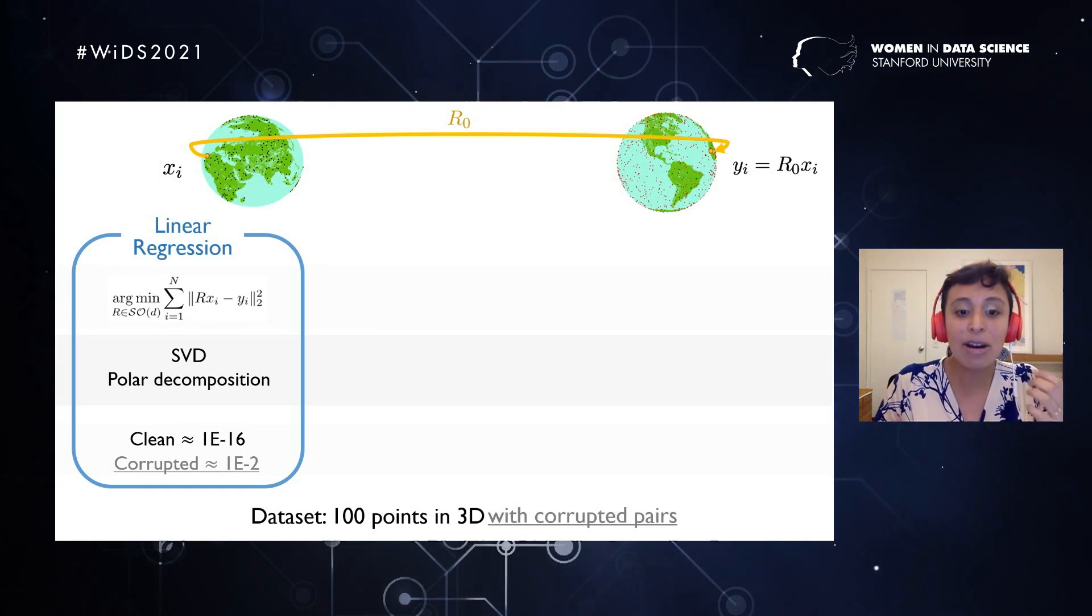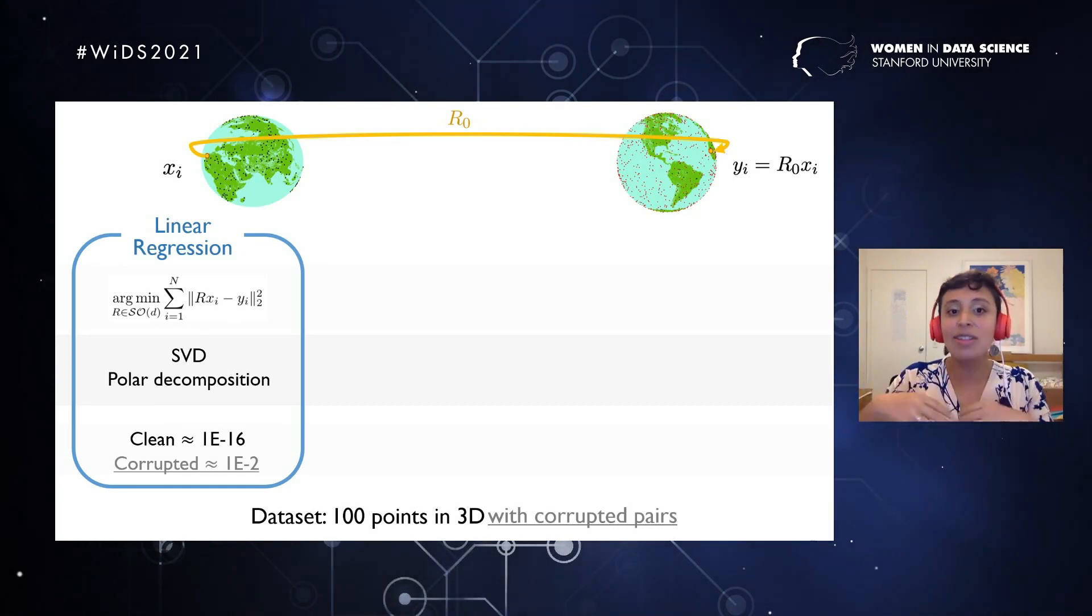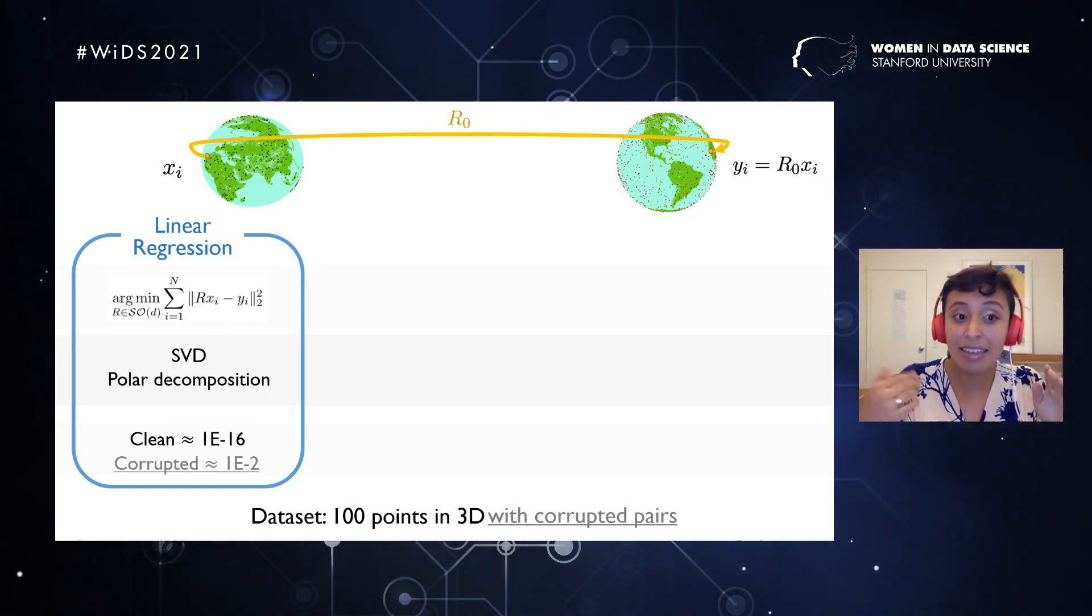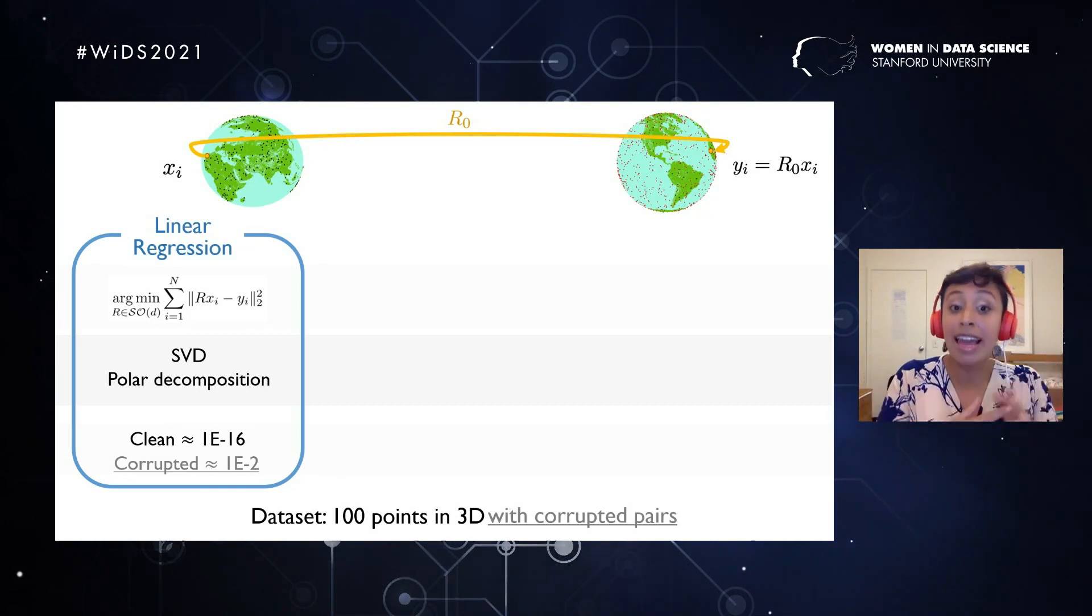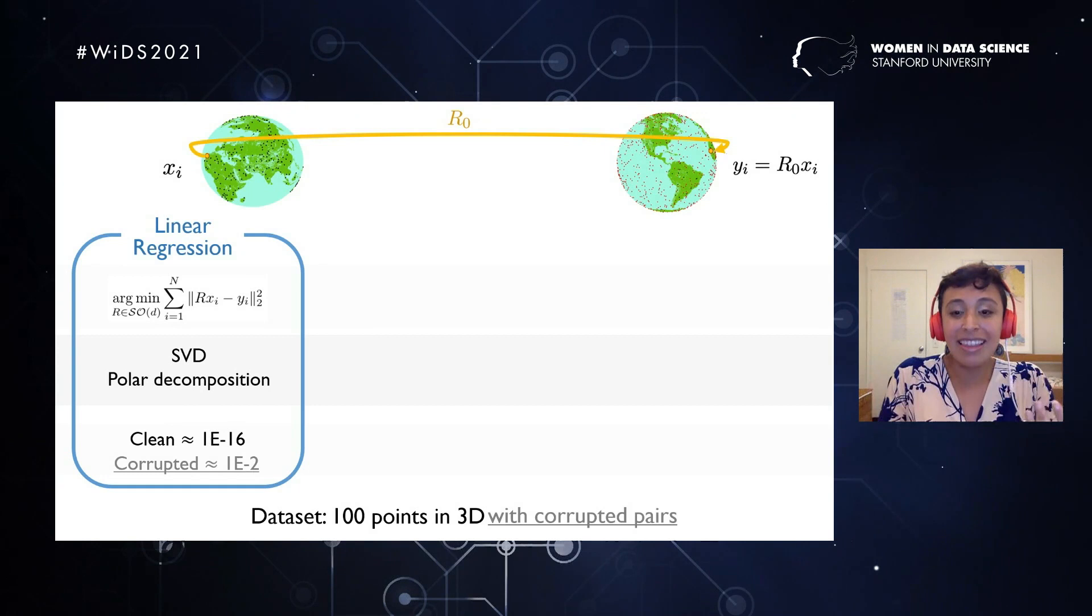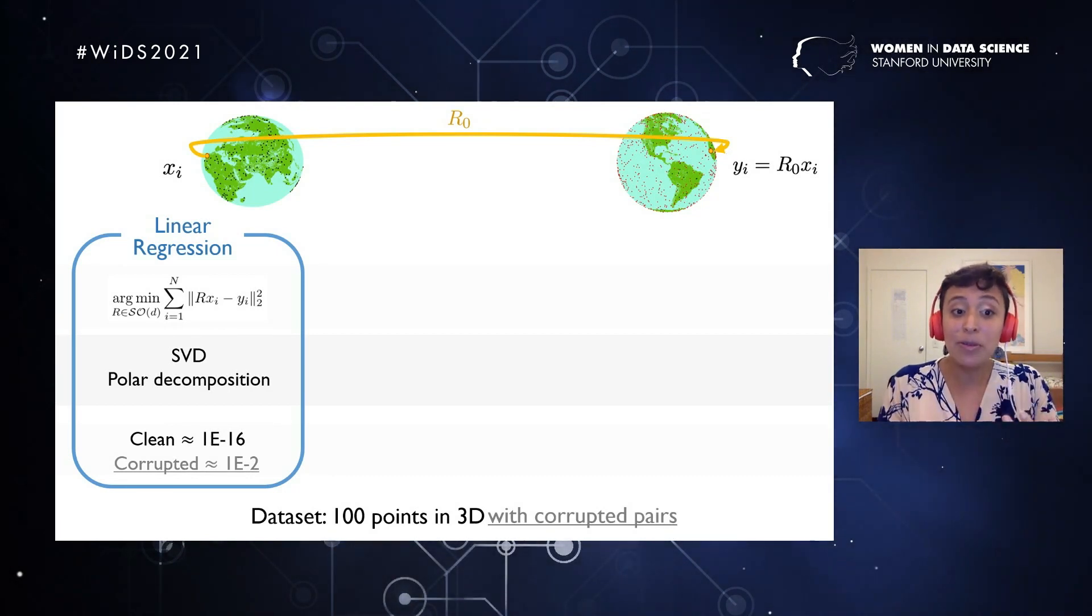The reality is that our data is not actually always clean. Sometimes our pairs are corrupted, meaning that a portion of our pairs are matching perfectly, but another portion of our pairs are totally random, and xi doesn't have anything to do with yi. So when we apply this linear regression model into this corrupted model, we get an error of 10 to the minus 2, so we lose that machine precision error, and it's not so great.